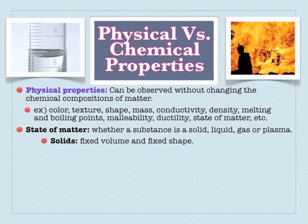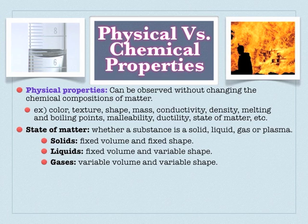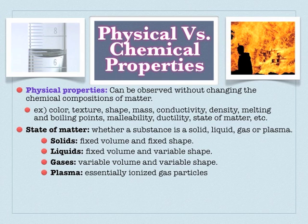The states of matter are pretty much differentiated between fixed and variable shape and volume. We can also add the concept of plasma, which is ionized gas particles floating in a sea of electrons so that they're conductive. You'll get to hear more about that in physics.